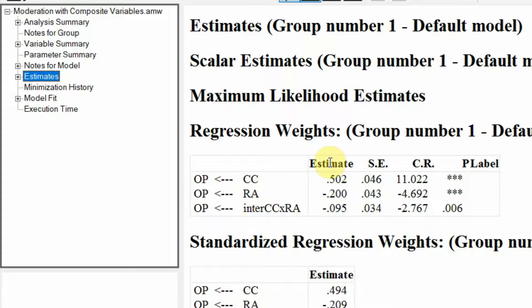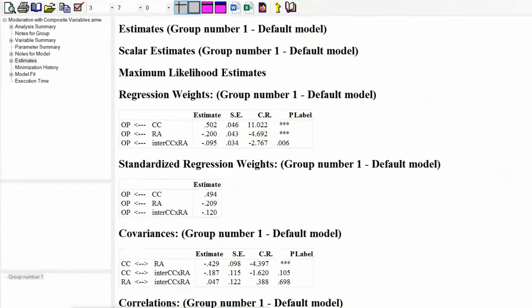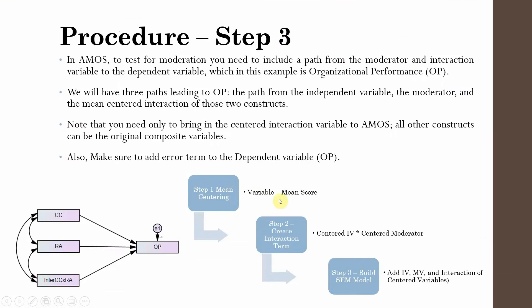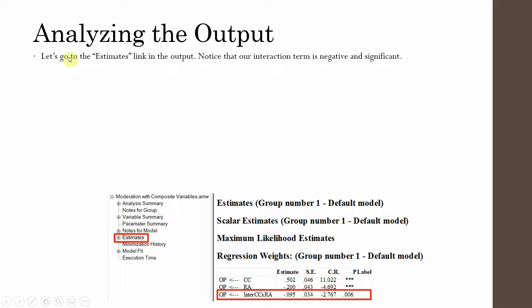How do we interpret these results? Looking at the output: Step 1 was variable minus mean score; Step 2 was creating the interaction term by multiplying centered IV with centered moderator; finally, you build your SEM model by adding IV, MV, and the interaction of centered variables. We go to Estimates in the output to get regression weights. We see that the interaction is negative and significant — because the p-value is less than 0.05. The negative value means that the moderator is negatively influencing the relationship between CC and OP.